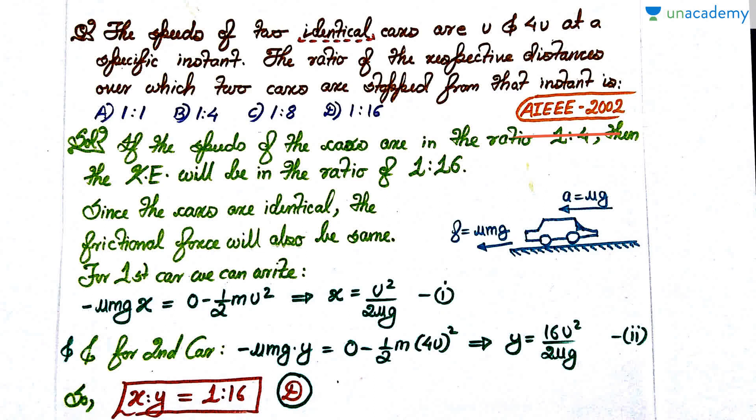I hope that you have attempted. If the speed of the cars are in the ratio 1 is to 4, then it is pretty obvious that the kinetic energy will be in the ratio 1 is to 16, because kinetic energy is equal to half mv².